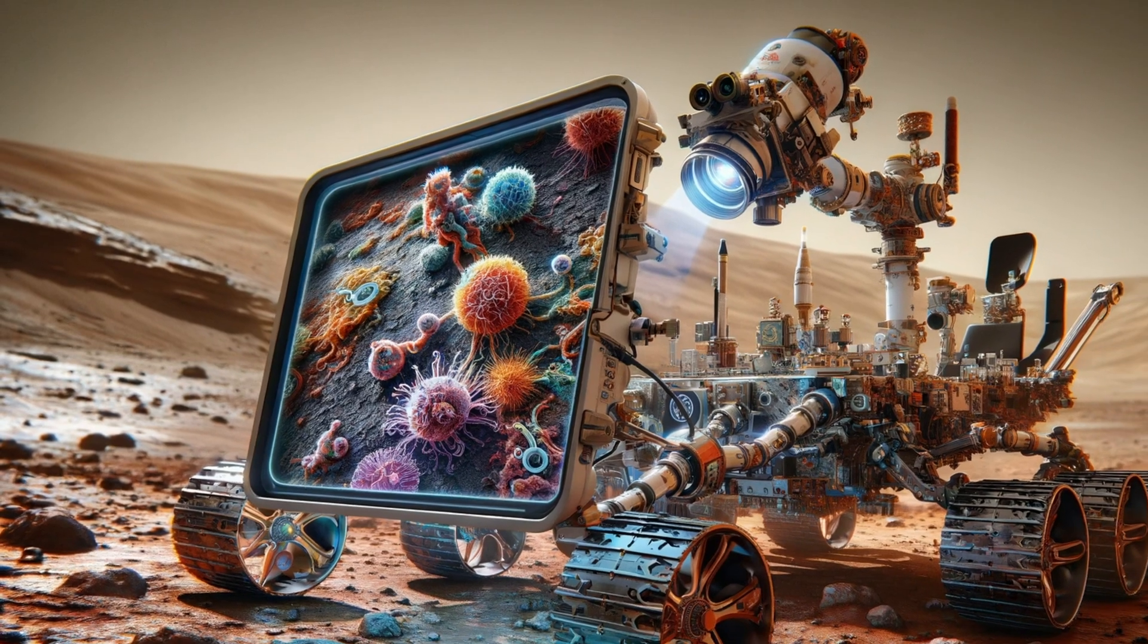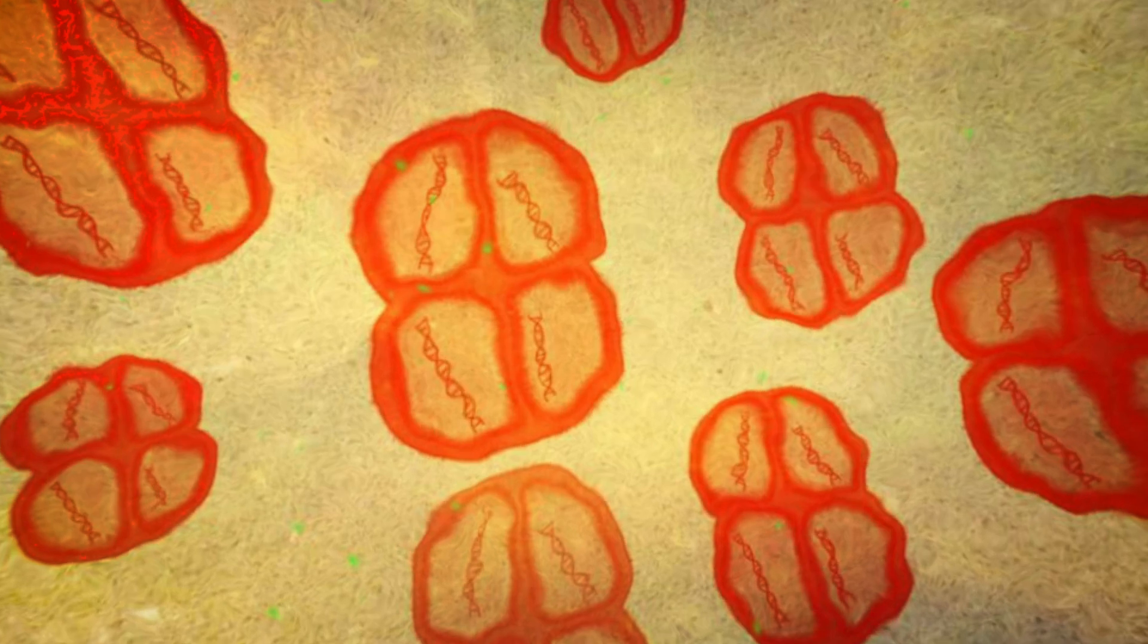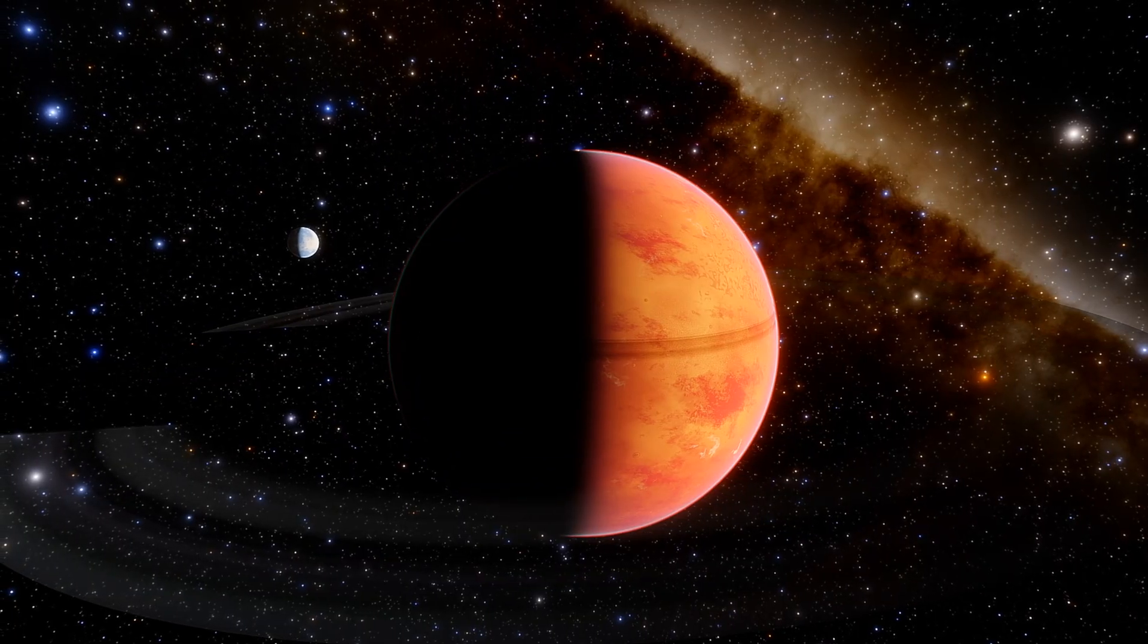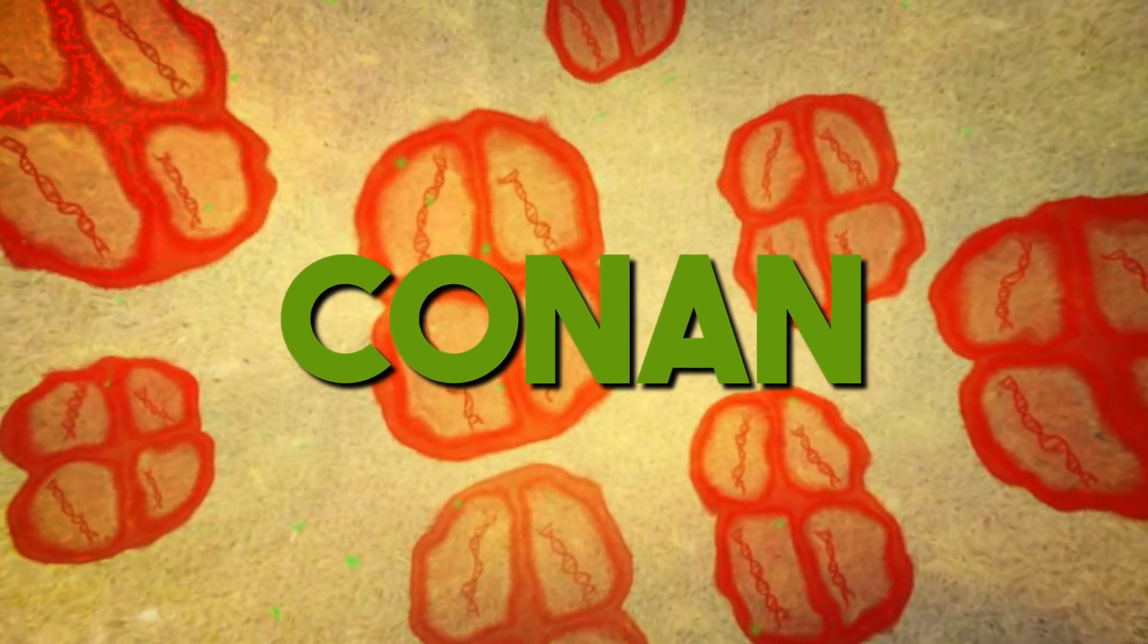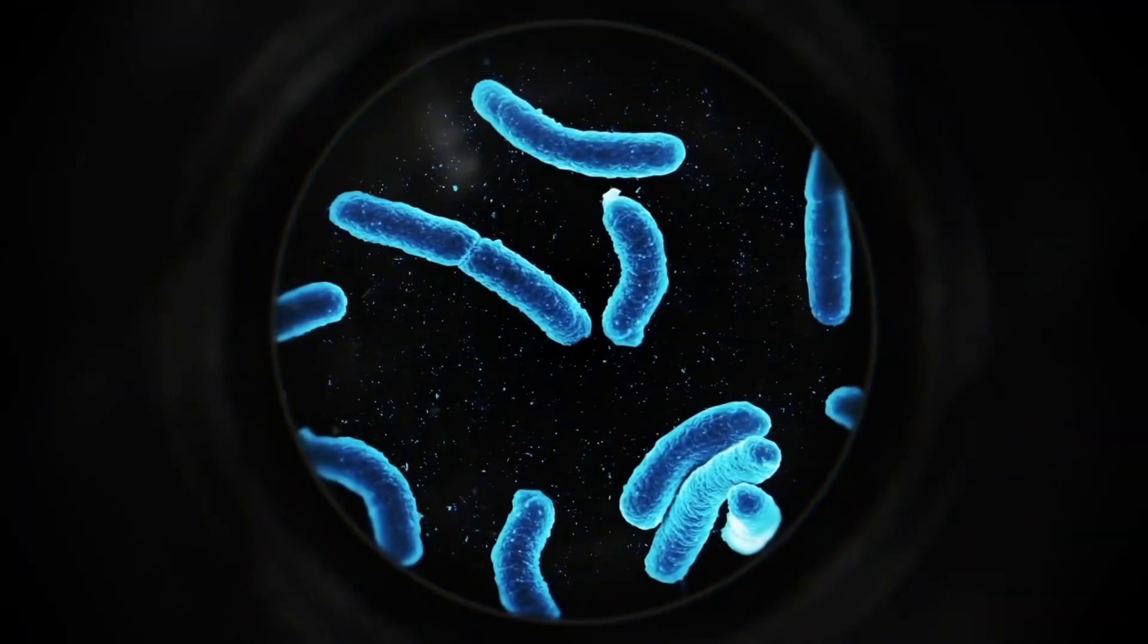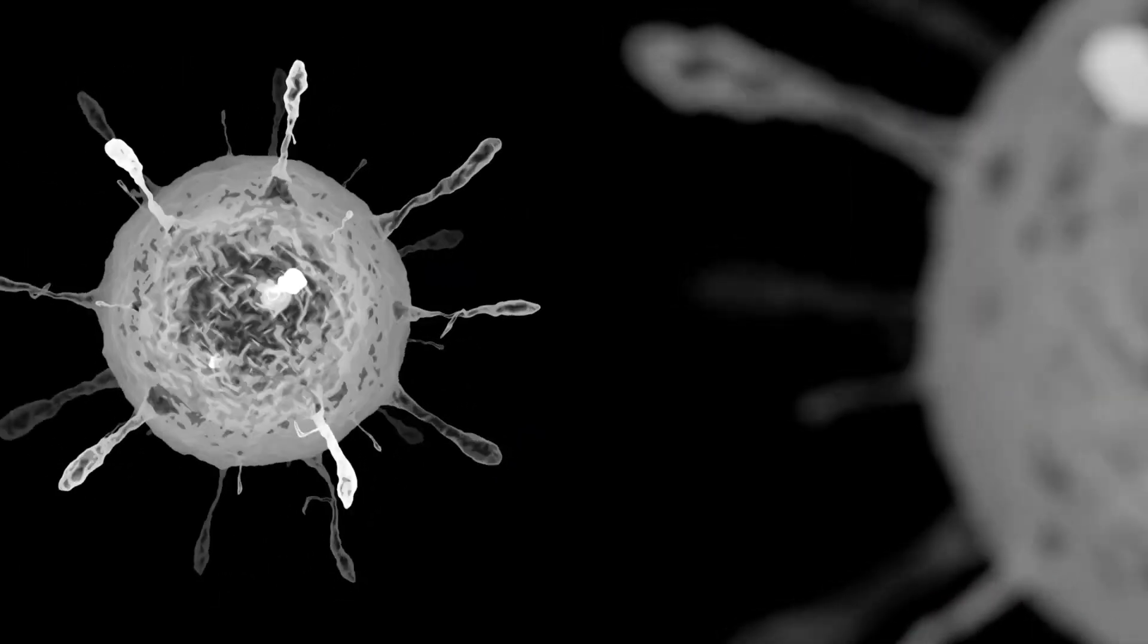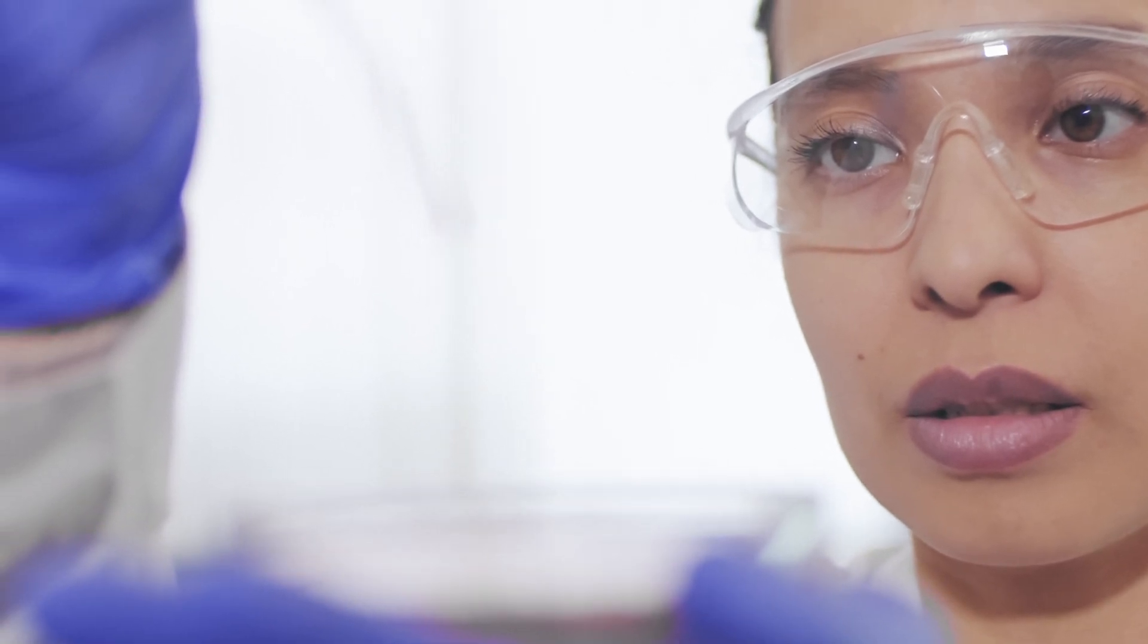The discovery of the Conan bacteria on Mars, capable of surviving in space, is not only a monumental scientific achievement but also a philosophical milestone. It would mean that life is not a phenomenon exclusive to Earth and that the universe could be teeming with life in ways we have not yet understood. Conan, a bacteria capable of withstanding the harsh environment of space on the Martian surface, with its extraordinary survival capabilities, not only redefines our understanding of life but also offers insights into the mechanisms of extremophiles, organisms that thrive in conditions lethal to most life forms on Earth.